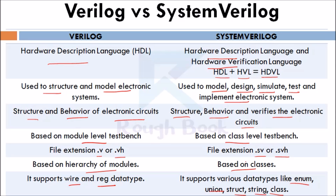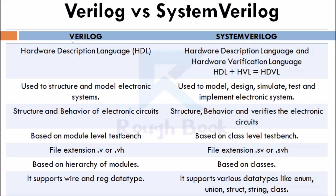System Verilog ensures that the given hardware design works as expected. Verilog has some limitations — it is static in nature, whereas System Verilog is dynamic in nature. Verilog doesn't have the ability to perform constrained random stimuli, use OOP features in test bench construction, functional coverage, or assertions. Verilog also has a limitation of reusability, whereas System Verilog overcomes all these limitations.